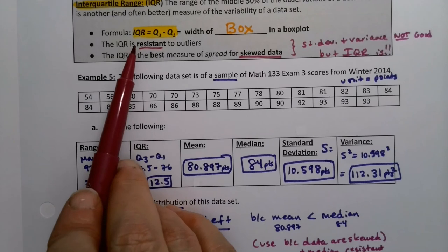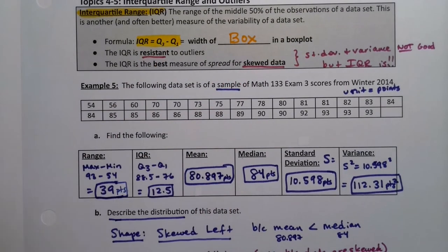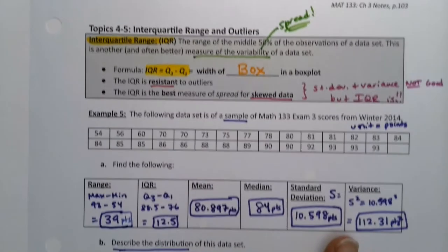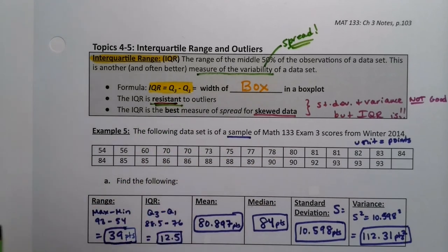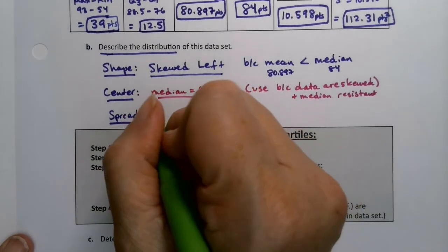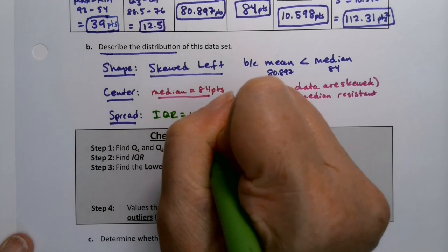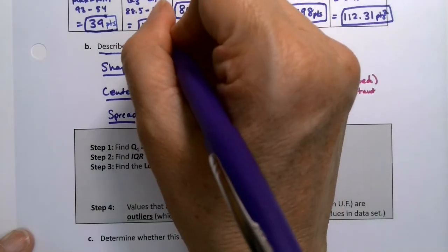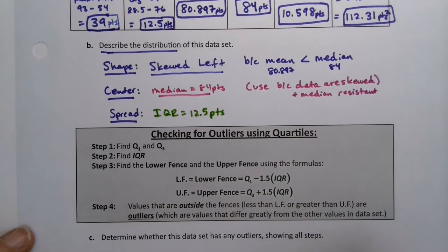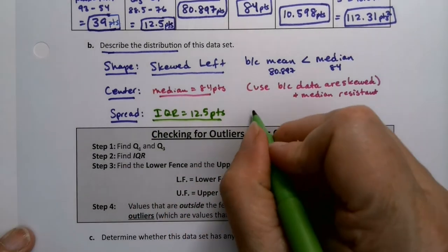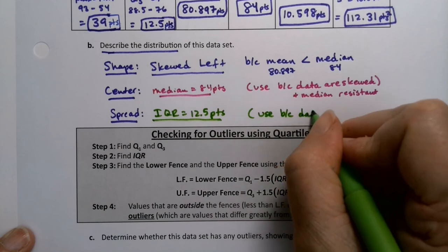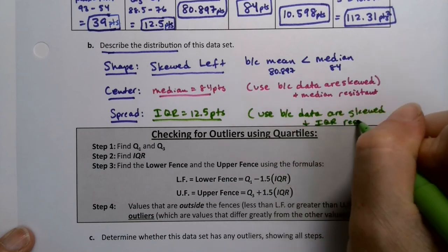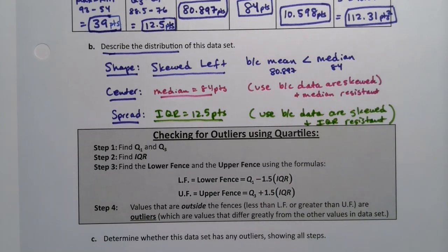But we also learned up here that the IQR is resistant. And the IQR is a measure of spread. That's what this is saying. It's a measure of variability, AKA spread. So if the IQR is a measure of spread and it's resistant, then that's what we should be using for our measure of spread. So IQR, which is 12.5 points, and you use it again because your data are skewed. IQR is resistant.